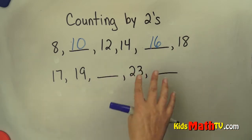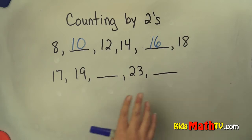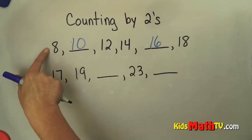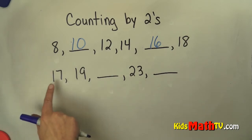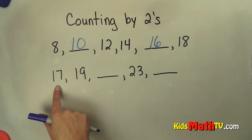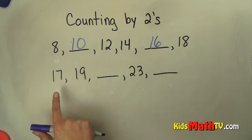You can also count by twos using odd numbers. These are all even numbers — you can use the odd numbers as well. So we do the same thing: we add two more.